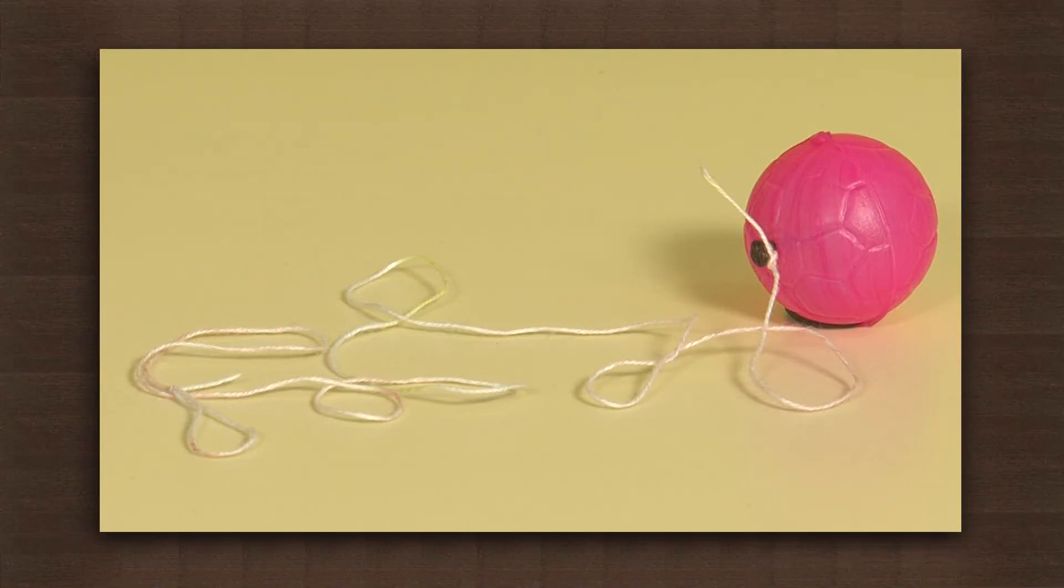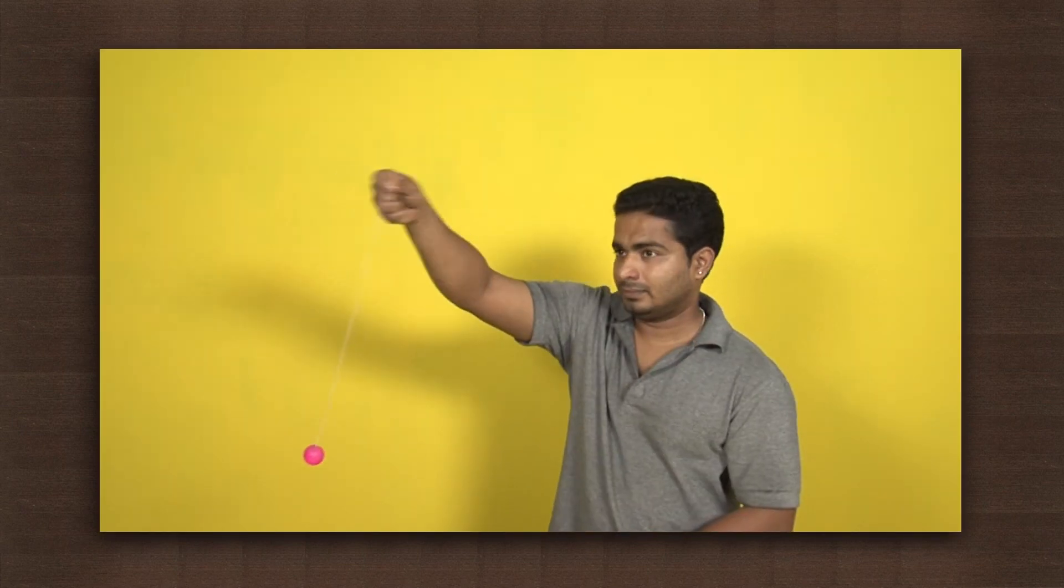Let us try to understand Earth's revolution around the Sun with this activity. For this we need a ball or a stone tied to a thread. Hold the thread tied to the stone and use your hands to revolve the ball or stone around your head. Take care while doing so.